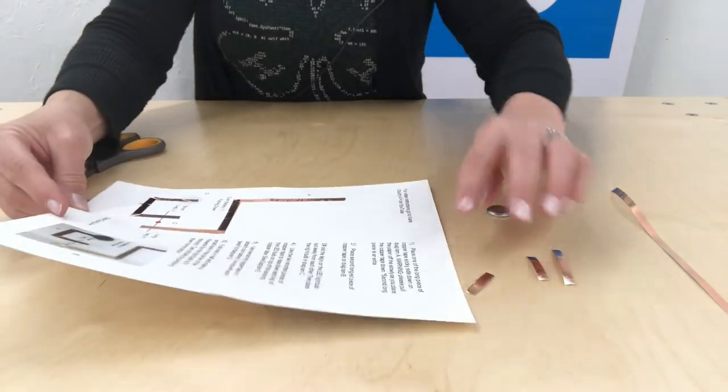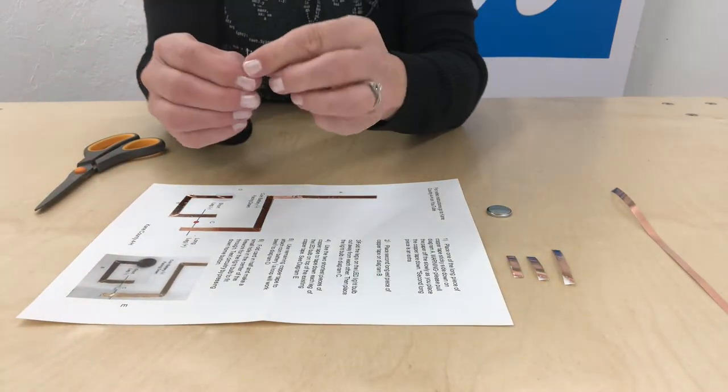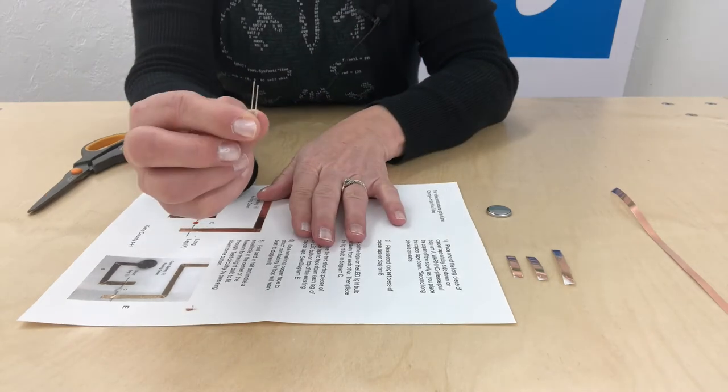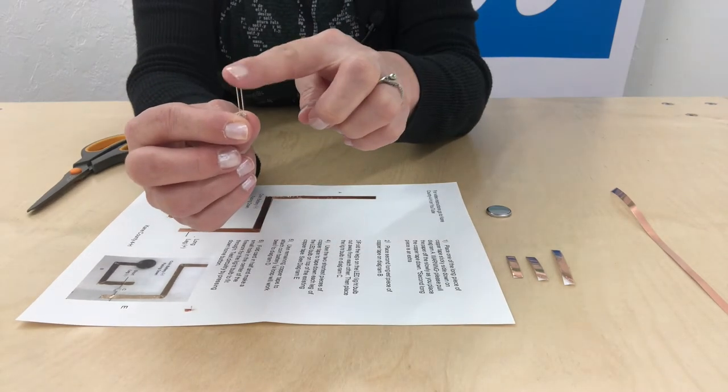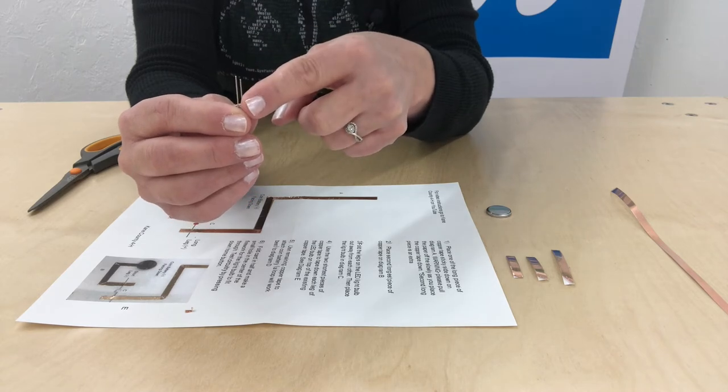Now we're ready to place our LED. When you pick up your LED and hold it in your hands like this, one leg is shorter than the other. The short leg is the negative side. The long leg is the positive side.